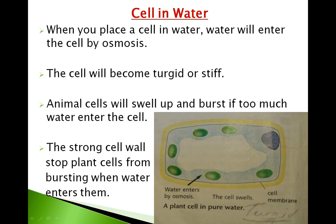A perfect definition of osmosis: osmosis is the movement of water from a region where its concentration is high — in a dilute solution — to where its concentration is low — in a more concentrated solution. What would happen if you place a plant cell in water? When you place a cell in water, water will enter the cell by osmosis, because inside the cell there is less water.